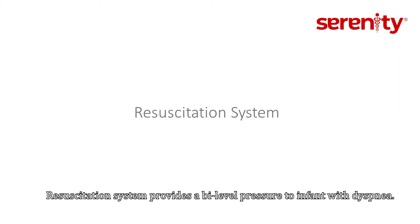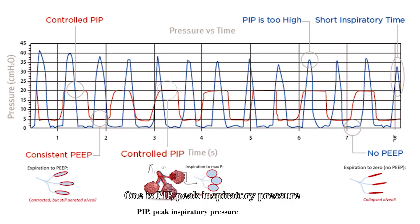Resuscitation system provides a bi-level pressure to infant with dyspnea. One is PIP, peak inspiratory pressure, which gives an alveolar opening pressure during inspiration.